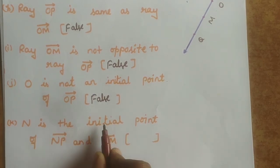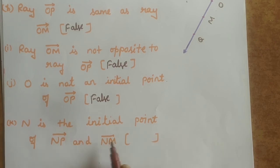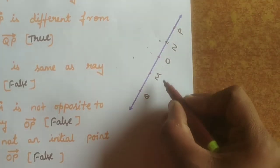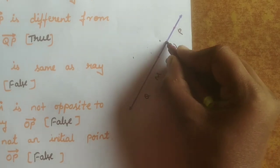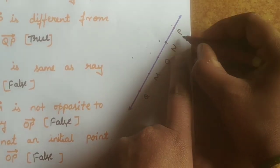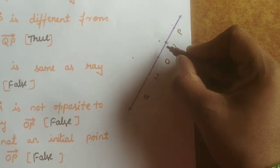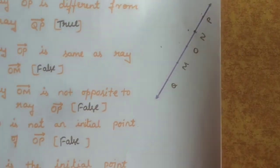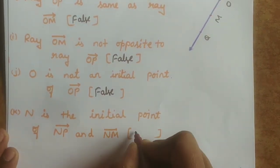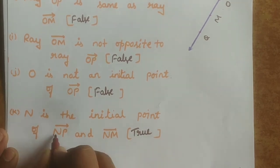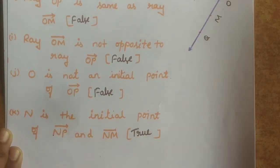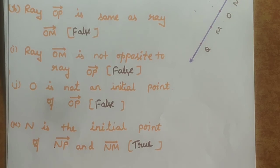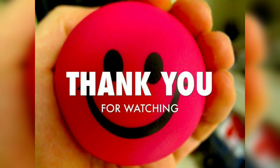Statement K: N is the initial point of rays NP and NM. For ray NP, N is the initial point and P is the end point. For ray NM, N is the initial point and M is the end point. So N is indeed the initial point of both NP and NM — this statement is true. Thank you children.